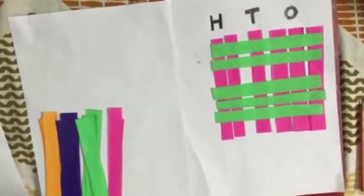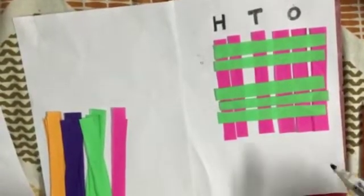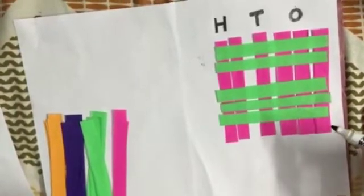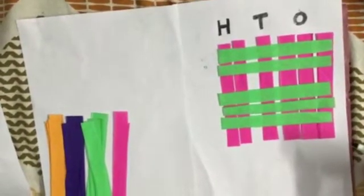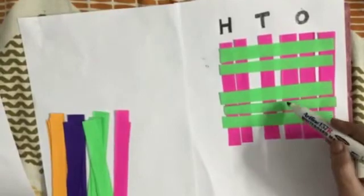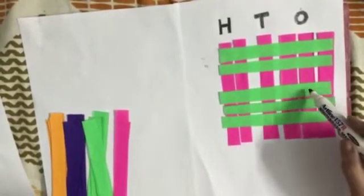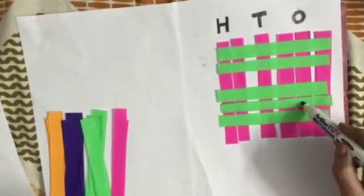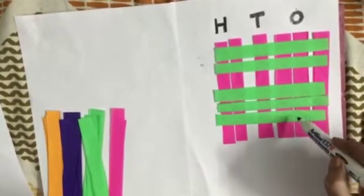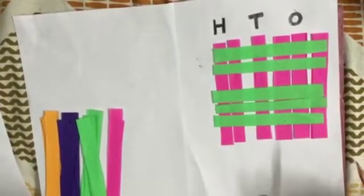Now we have to count the meeting points of these strips. First of all, we have to count meeting points of the right-hand side. This is our right-hand side: 1, 2, 3, 4, 5, 6, 7, 8, 9. So we will write 9 here.